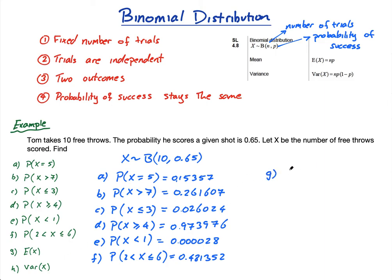Next is the expected value — how much do we expect him to score? The expected value is simply n times p. Think about it: if you flip a coin 100 times you'd expect 50 heads, and 500 times you'd expect 250 heads, which is 500 × 0.5. Here: 10 × 0.65 = 6.5. The expected value is 6.5.